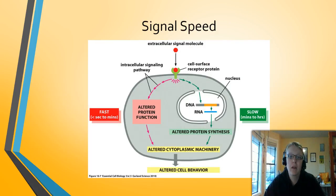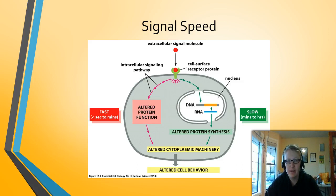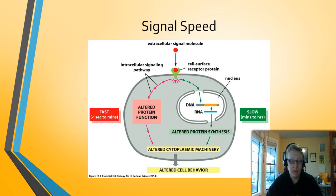Now let's talk about signal speed. Signal speed can be fast or slow — it depends on what the signal is, what the receiving cell is capable of doing, and what process the signal is asking the cell to change. There are two possible functions: alter protein function, and alter protein synthesis. The fast reaction alters protein function, while the slow one alters protein synthesis. Altering protein function through phosphorylation or degradation is quicker, whereas altering protein synthesis has to go through transcription and translation. Some signals can create both cascades, some just one.